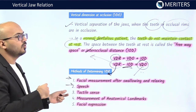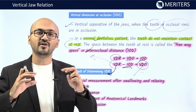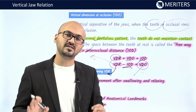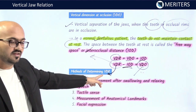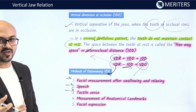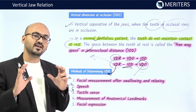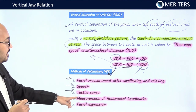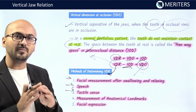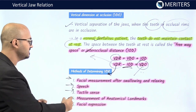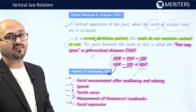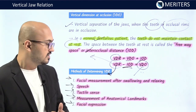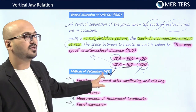The second method involves speech. Say a word like 'arm' — words ending with M will create freeway space naturally and help the patient come to vertical dimension at rest. Third is tactile sensation, a proprioceptive mechanism where you ask the patient to relax and they will rest at that position naturally. Fourth is measurement of anatomical landmarks — stable intraoral landmarks can be used for VDR assessment. Fifth is facial expressions — a very long, taut face indicates more VDR; a very sunken, collapsed lower third indicates less.